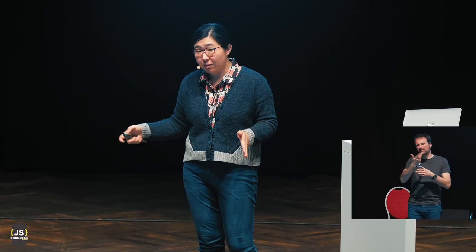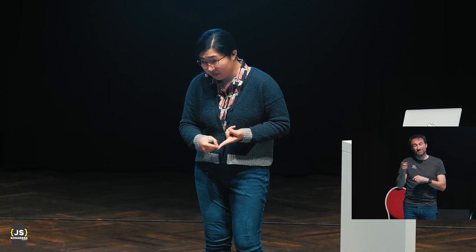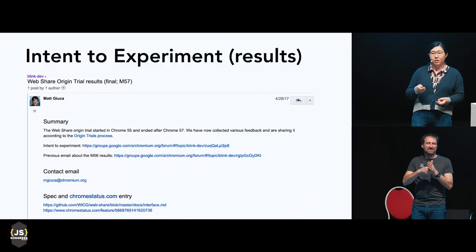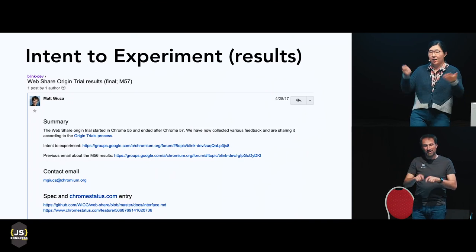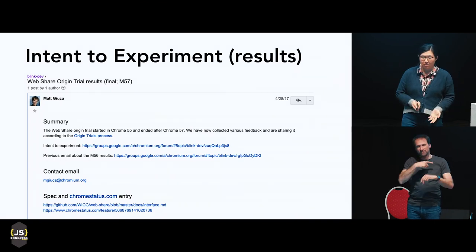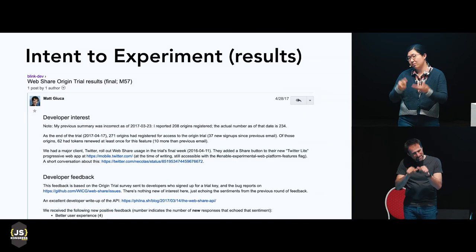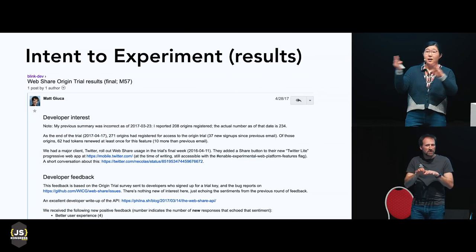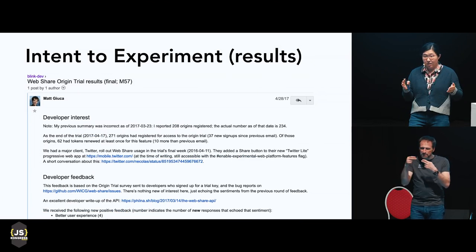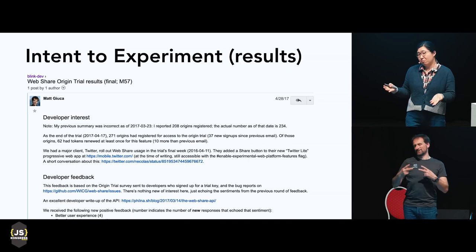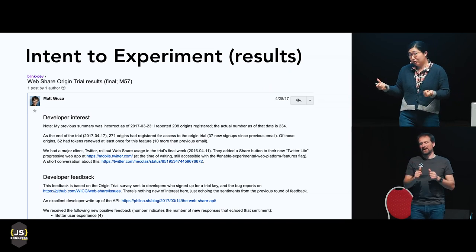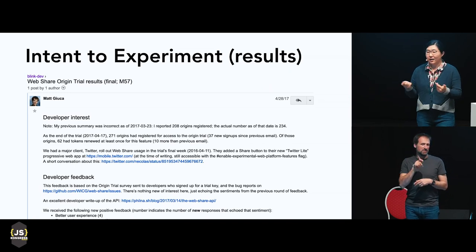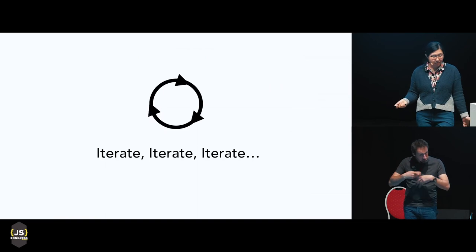The way a feature gets to experiment is via an email called 'intent to experiment,' which includes goals for the experimentation, what the timeline looks like, known risks, and ongoing discussions. Origin trial is about doing a science experiment in the field. Your key will expire, your experiment will end, and results get published with findings on developer interest and feedback. Based on that, there might be another design iteration, or it might be good to go and ship.